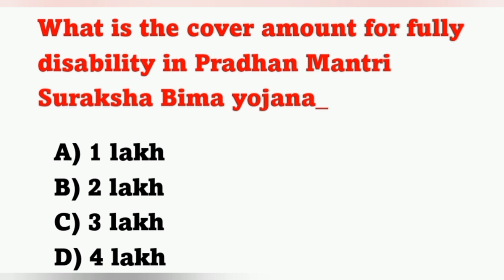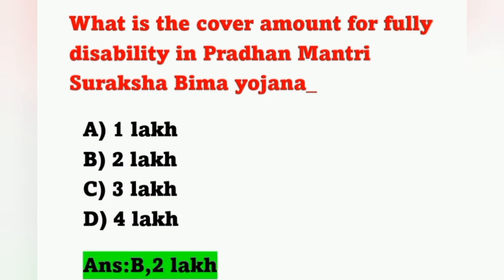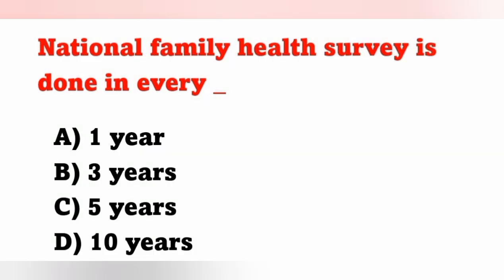Next question: What is the cover amount for full disability under Pradhan Mantri Suraksha Bima Yojana? Options: A) 1 lakh, B) 2 lakh, C) 3 lakh, D) 4 lakh. This scheme covers both disability and death related to accidents. The cover amount is 2 lakh. Option B is the correct answer.